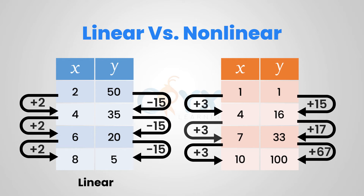If we look at the table on the right, in the y-values we can see that it increases from 1 to 16 for a change of 15, from 16 to 33 for a change of 17, and from 33 to 100 for a change of 67. We can see that it is not increasing by the same amount each time. The x-values go from 1 to 4, 4 to 7, and 7 to 10, for a change of positive 3. However, the rate of change — 15 over 3, 17 over 3, 67 over 3 — is not constant. Therefore, it is a non-linear function.